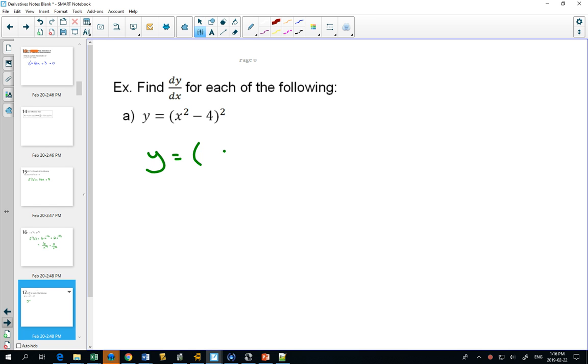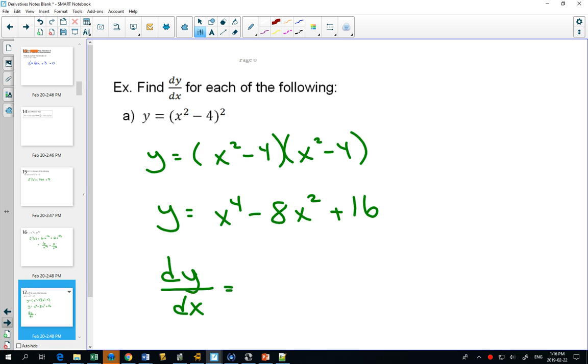Well, squared means multiplied by itself. If I distribute everything here, I will change it into a form that I can do. Now each of the derivatives can be found, and it says find dy/dx, so we'll use the right notation: 4x³ - 16x.